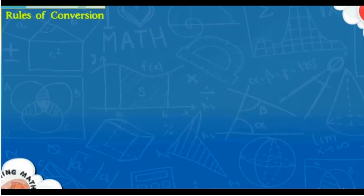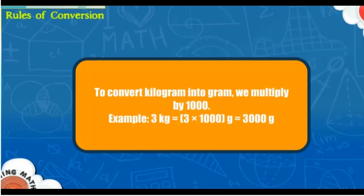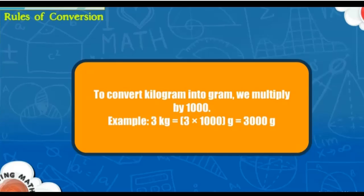Rules of conversion: To convert kilogram into gram, we multiply by 1000. For example, 3 kilograms is equal to 3 × 1000 grams, which is equal to 3000 grams.